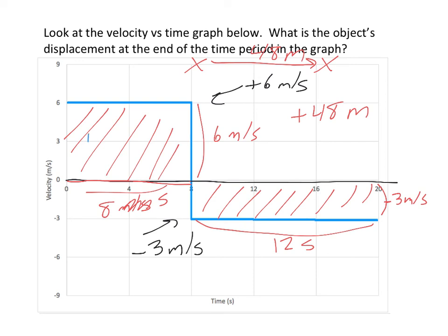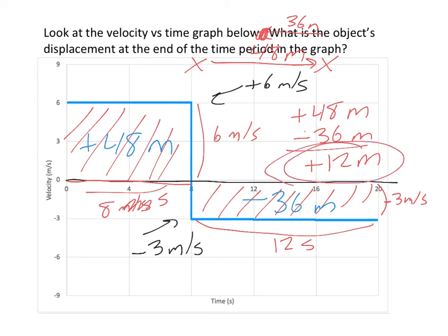So if this is positive 48, this is negative 36. So what is the total displacement? So again, initially it went 48 to the right, then it backtracked 36. So my final position is here, and that is a total of 12 meters to the right. It's a positive 12 when we do this math out. So your full displacement would be positive 12 meters or just 12 meters.